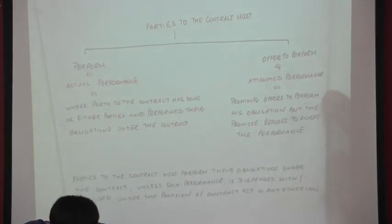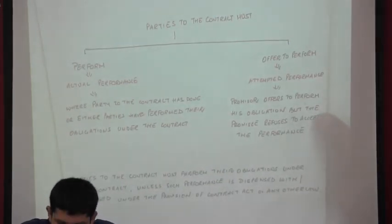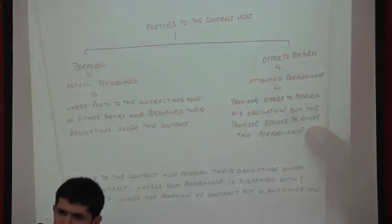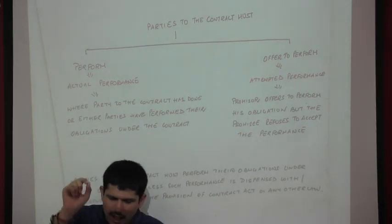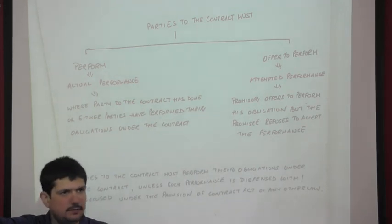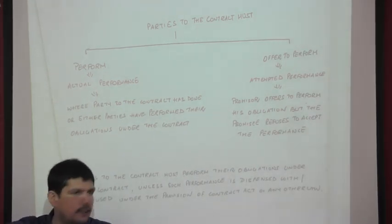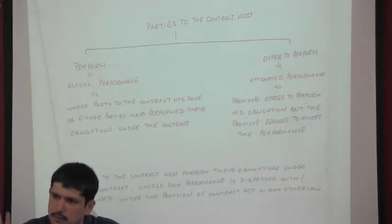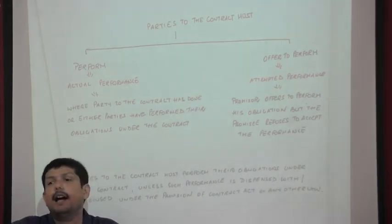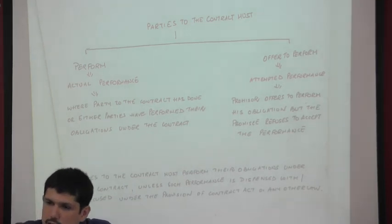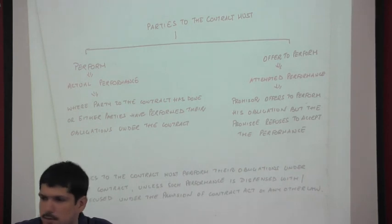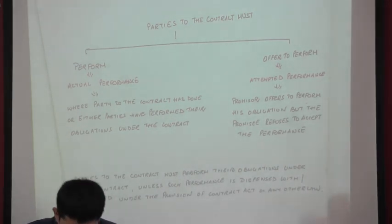The promiser offers to perform his obligation but the promisee refuses to accept the performance. To summarize: in actual performance, JP delivered the car and paid 5 lakh rupees — done. In attempted performance, JP wanted to deliver the car but Anand refused to take delivery.